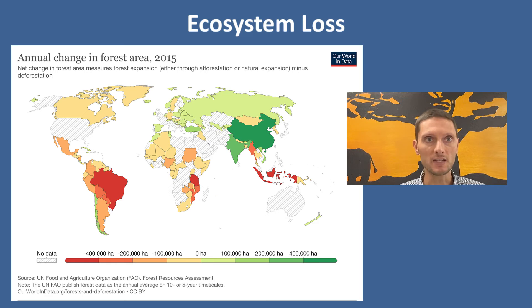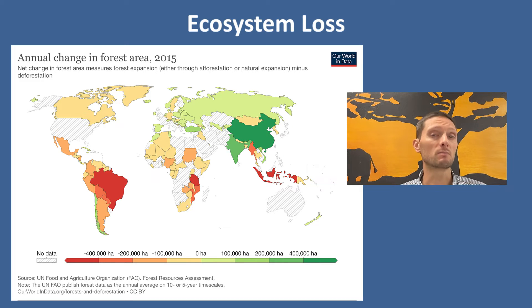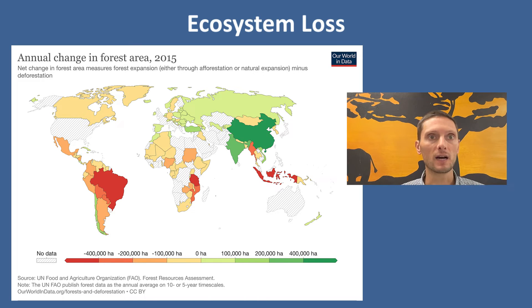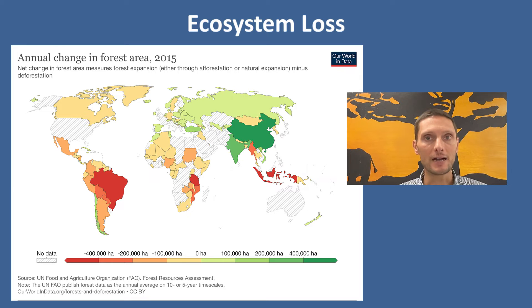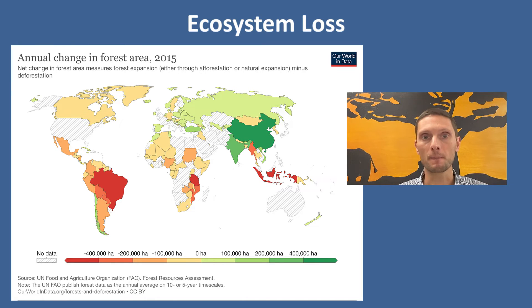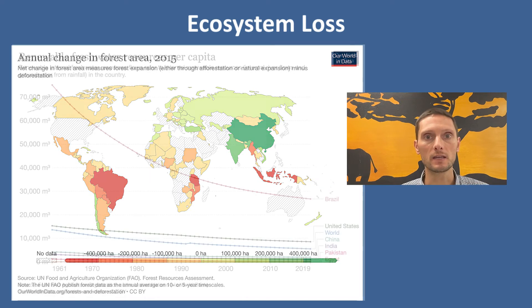Additionally, over-exploitation of natural resources such as wood, hunting, and fishing are primary examples of ecosystem loss. Mining and smelting have led to ecosystem loss through land use change and pollution. Acid rain, copper, nickel, and other metals can really impact water systems and ecosystems.